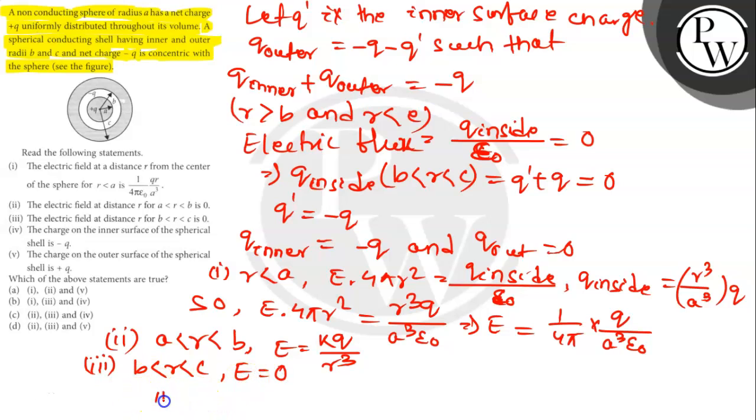Let's solve statement 4. Electric field for C < R: E equals k Q_outer divided by R². It will be k times 0 divided by R², which is 0.